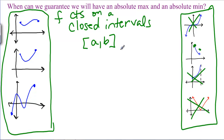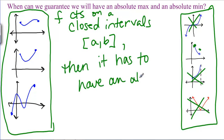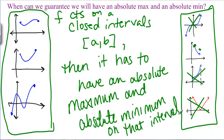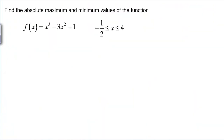So we need a function that is continuous on a closed interval. If F is continuous on a closed interval, then it must have an absolute maximum and an absolute minimum on that interval. This is called the Extreme Value Theorem. We can use the Extreme Value Theorem to actually find the absolute maximum and minimum values of a continuous function on a closed interval — and we know it must have both.